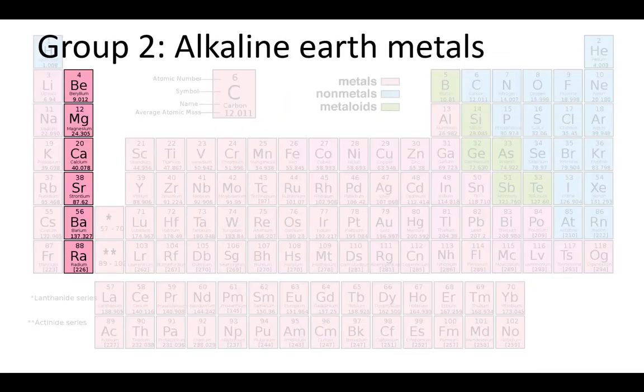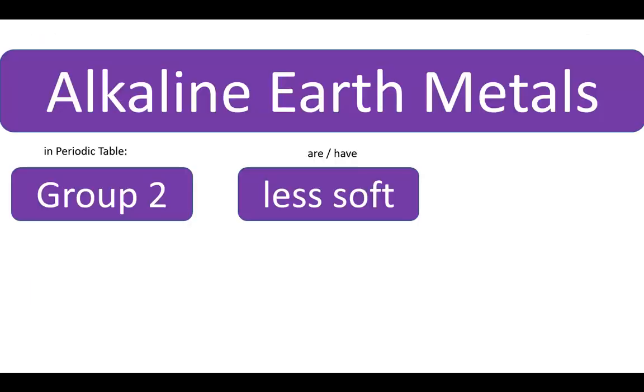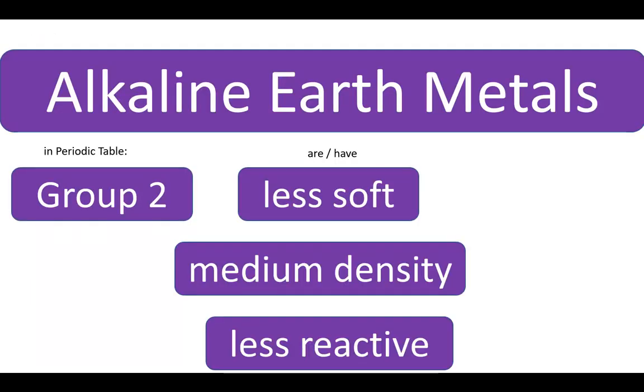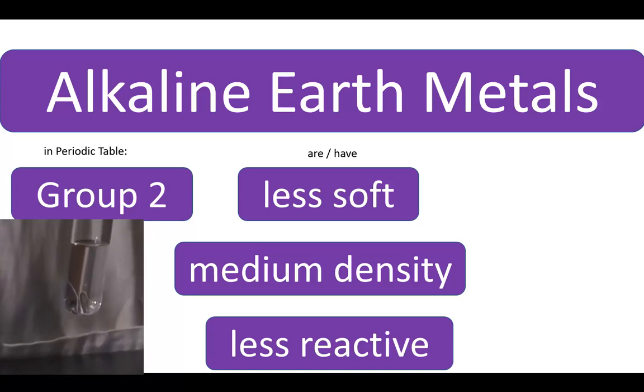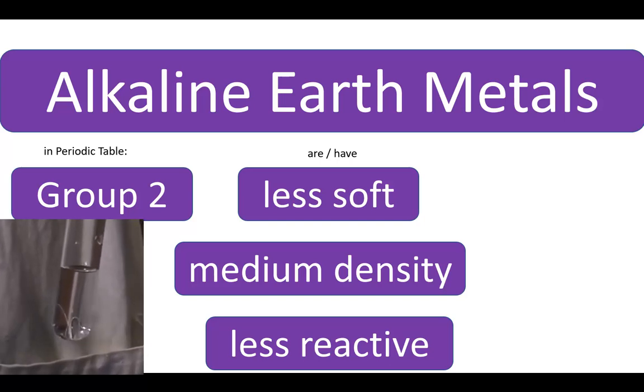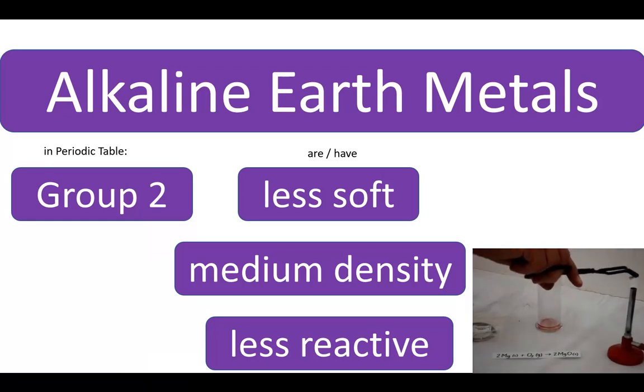Group 2 elements are called alkaline earth metals. So if you put some magnesium inside water, it sinks. It doesn't float like sodium and potassium did. And also it doesn't react violently with the cold water like the alkali metals do. But it is still pretty reactive.